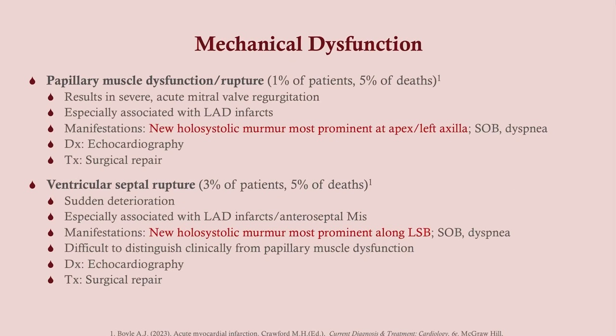Papillary muscle dysfunction or rupture involves the muscle responsible for opening and closing the mitral valve. What we get is a sudden mitral regurgitation, causing a holosystolic murmur most prominent at the apex and left axilla, just as we'd expect with any mitral regurgitation. Diagnosis is echocardiogram and treatment is surgical repair. Because of the mitral regurgitation, there's increased pressure in the left atrium, causing pulmonary symptoms. Ventricular septal rupture presents identically, but the murmur is more prominent along the left sternal border, because it involves the ventricular septum rather than the mitral valve.